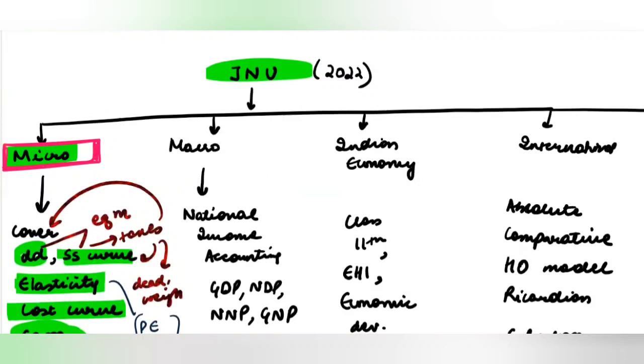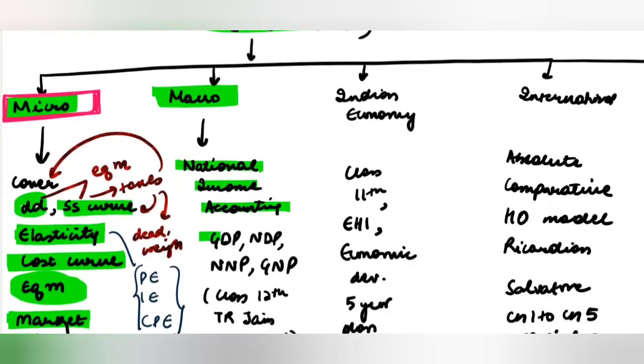Now let's see what should be covered under macroeconomics. Mostly you have to cover national income accounting. You should know how to calculate GDP, NDP, GNP, NNP, private income, personal disposable income, etc.